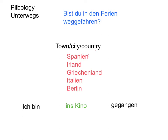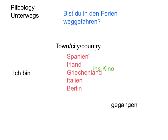What if you want to say you want to go to a different country? You can't say ins Italien — which by now you've probably figured out means Italy. We've got here Spain, Ireland, Griechenland, Italien, and Berlin, just to give you an example, because there's a slightly different rule than using ins. So, to answer the question bist du in den Ferien weggefahren?, we take ich bin — or ja, ich bin — but we get rid of ins Kino and replace it with one of these countries, because we're going to a different country.